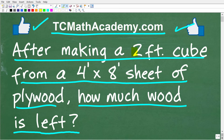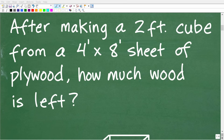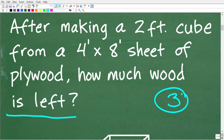One more time: after making a two-foot cube — so what is a cube? It's a three-dimensional object; just think of an ice cube — from a four-foot by eight-foot sheet of plywood, how much of this plywood is left over after you build this cube? The first step to solving any math word problem is to read it more than one time.